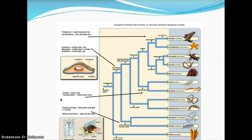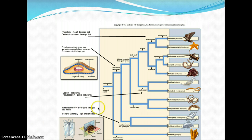Animals have different types of symmetry. Radial symmetry is when body parts are arranged in a wheel pattern, like that of echinoderms or a sea star. Bilateral symmetry means you have both right and left sides, which we can see in humans.